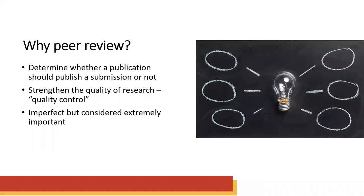So why peer review? Since peer review can vary so much, we'll focus on the most common features and general models of academic peer review, and today on the journal publication process specifically. The stated aim of peer review is to determine whether a publication should publish a submission or not. Peer review aspires to strengthen the content of a publication and the quality of research and writing in it, and is widely considered to be a means of quality control. You'll often hear terms like 'gold standard' with regard to peer review, or words like quality, integrity, or rigor.